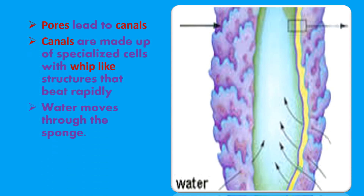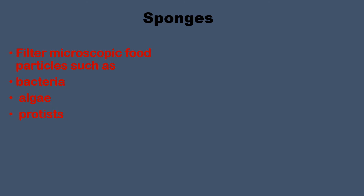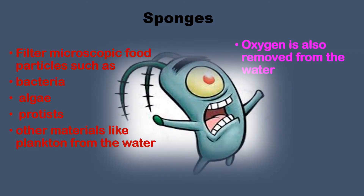Ocean water enters the sponge's body through these pores. The pores lead to canals, which are made up of specialized thread-like whip structures. These structures whip rapidly as the water passes through the sponge's body. This whip-like motion allows the water to pass through, and as it moves through, the sponge filters microscopic food particles such as bacteria, algae, protists, and other materials like plankton.